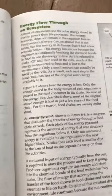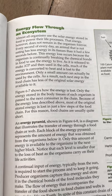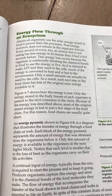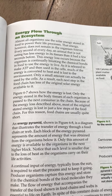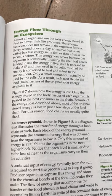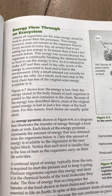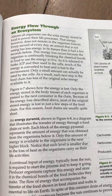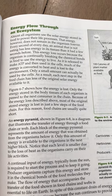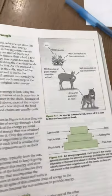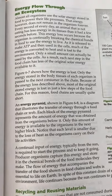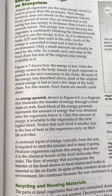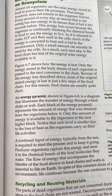Energy flow through an ecosystem. Almost all organisms use the solar energy stored in food to power their life processes. That energy, however, does not remain in the organism forever. Every second an animal that is not eating has less energy in its tissues than it had a few seconds before. This energy loss occurs because the organism is continually breaking the chemical bonds in food to use the energy to live. As it is released to make ATP and then used in the cells, much of the energy is converted to heat and is lost to the environment. Only a small amount can actually be used by the cells. As a result, each next step in the food chain has less of the original solar energy available to it. Most of the original stored energy is lost in just a few steps of the food chain. For this reason, food chains are usually quite short.